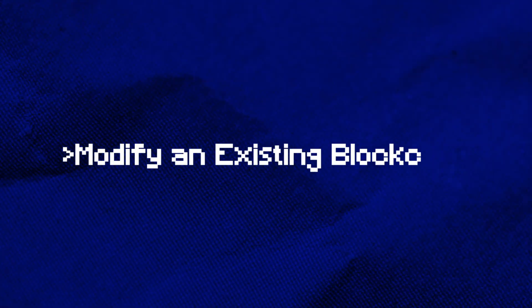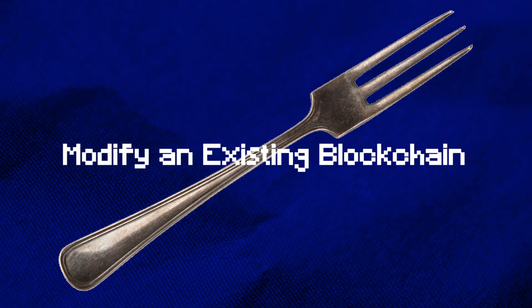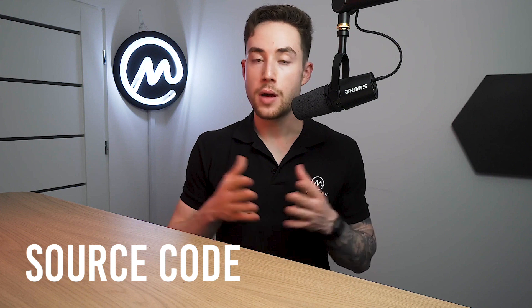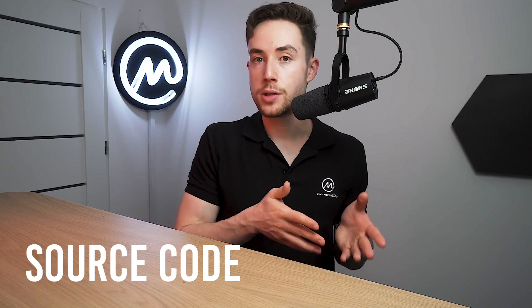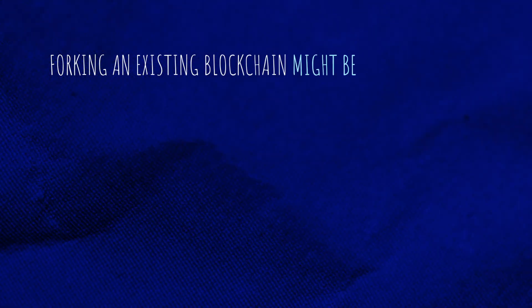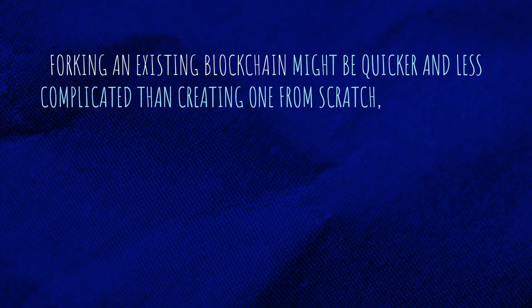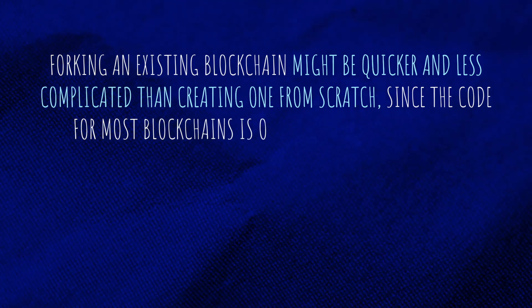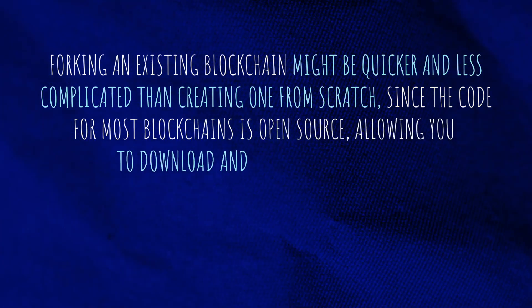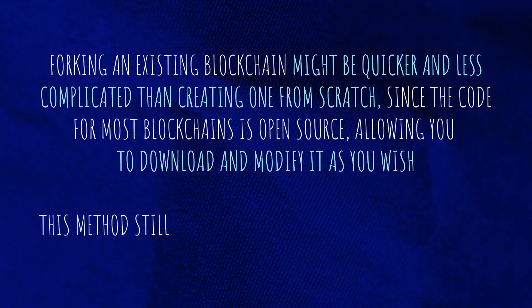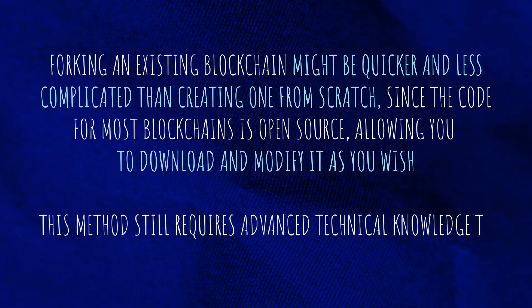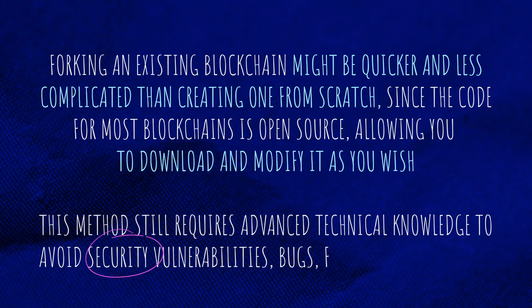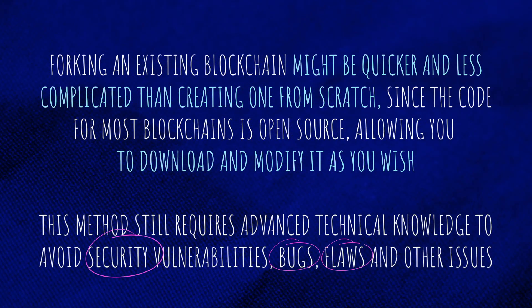Modifying or forking an existing blockchain means creating a coin. If you don't have the resources to create your own blockchain, you can use the source code of another blockchain to create a new blockchain and native digital currency. Forking an existing blockchain can actually be quicker and less complicated than creating a new one from scratch, since the code for most blockchains is open source, allowing you to download and modify it as you wish. This method still requires advanced technical knowledge to avoid security vulnerabilities, bugs, flaws, and other issues.